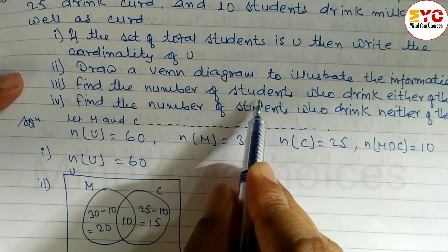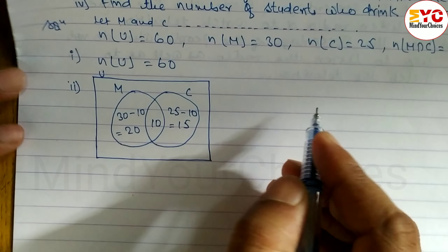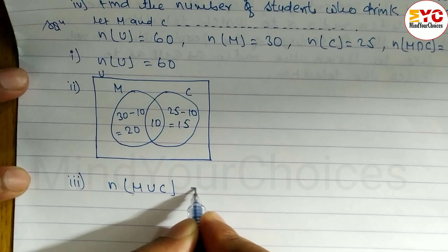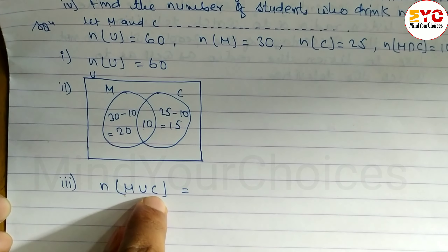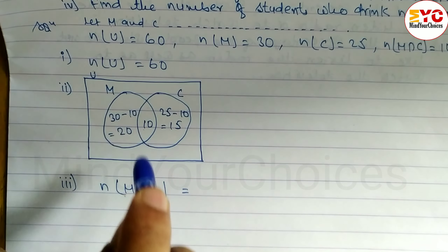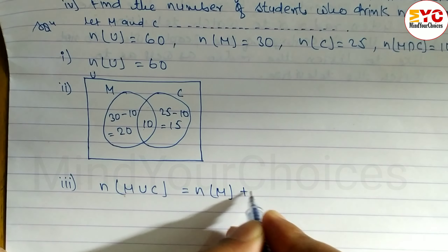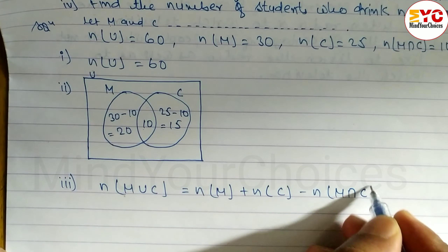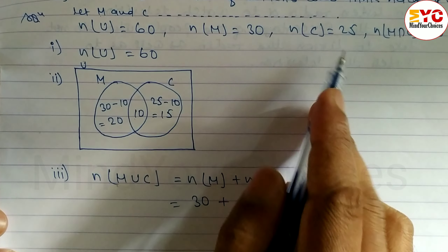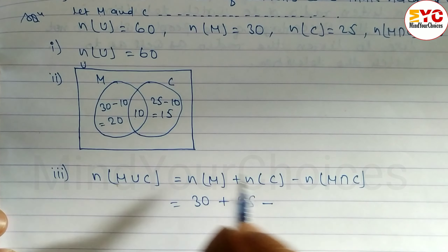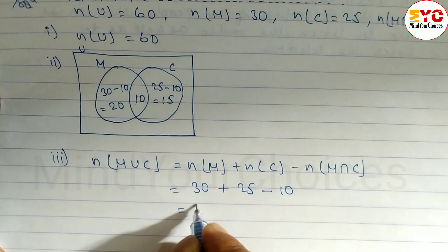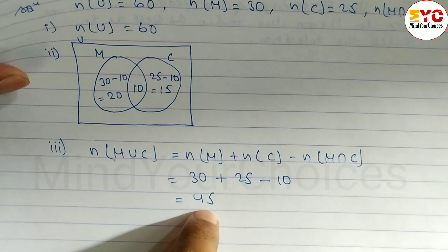For only curd: n(C) = 25, so 25 minus 10 gives us 15. Number 3: Find the number of students who drink either of them. 'Either of them' means union — either they drink milk or curd or both. Formula: n(M ∪ C) = n(M) + n(C) − n(M ∩ C) = 30 + 25 − 10 = 45. So 45 students drink either milk or curd.